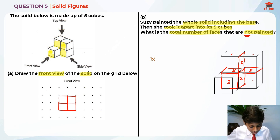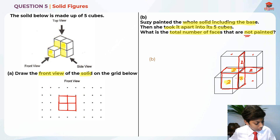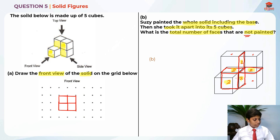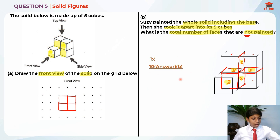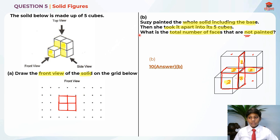So now you just need to count them up. It's two here, two here, two here, two here, and two here — that's five twos, which makes ten. So ten is the answer for Part B. I hope you understood my explanation for question 5. Thank you and bye-bye. I'll see you in my next video.